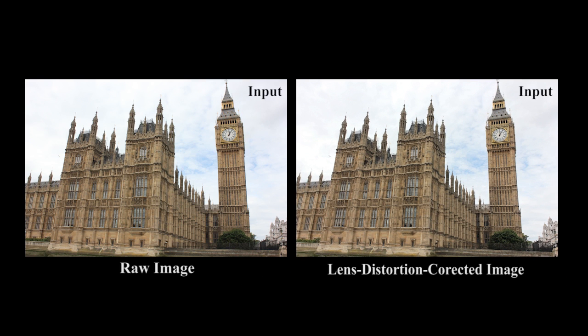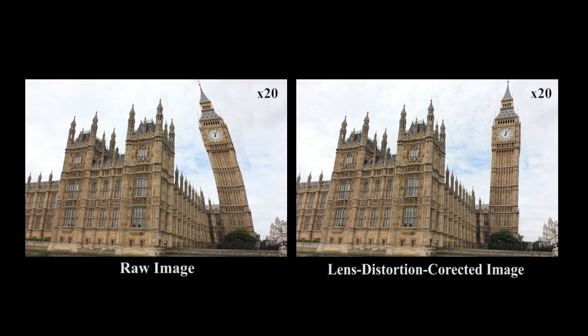We had to correct for lens distortion. Without correction, the tower's tilt is reversed, as shown on the left. The lens-corrected version matches reality.